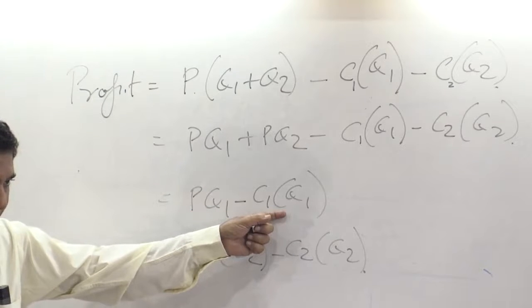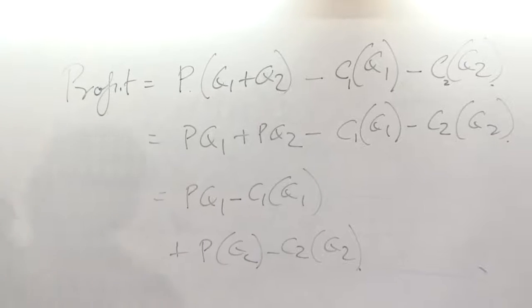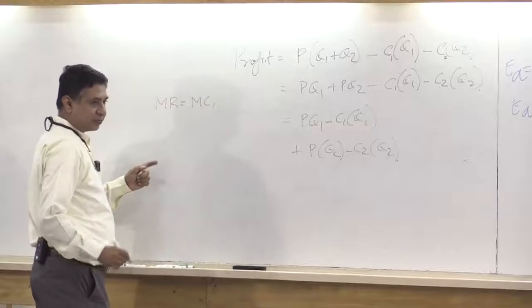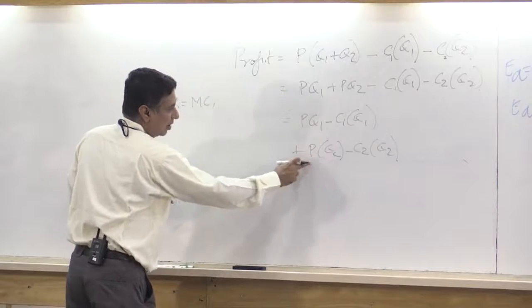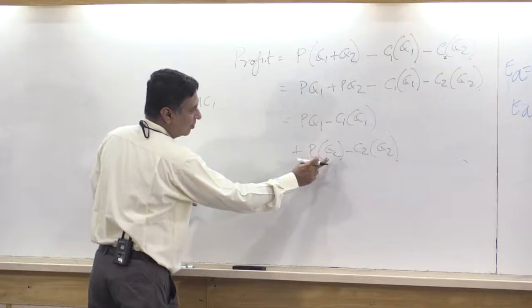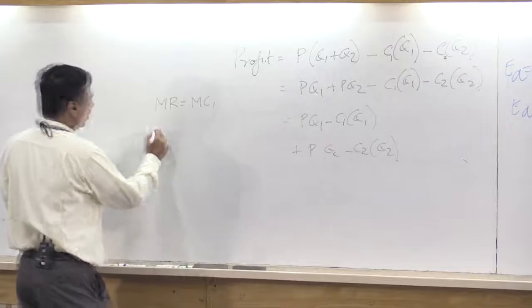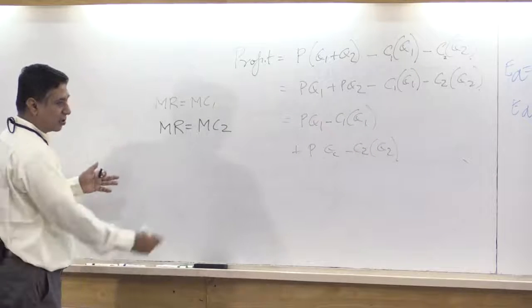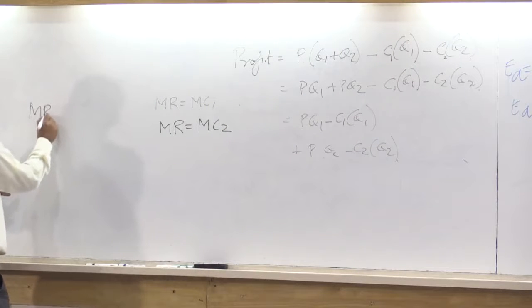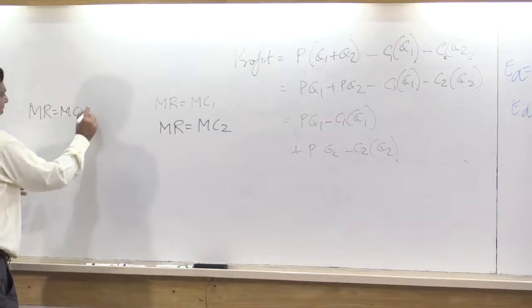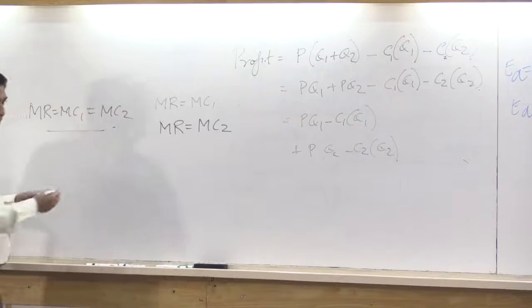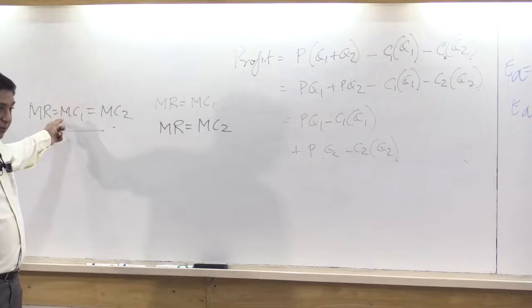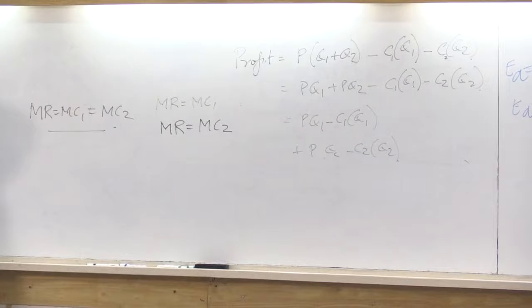So I will get MR equal to MC1. Second one I will do again, I will get, since the demand curves are the same, MR equal to MC2. So then this will just become MR equal to MC1 equal to MC2. So you would equate the marginal cost in the two firms such that it is equal to the marginal revenue.